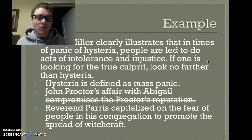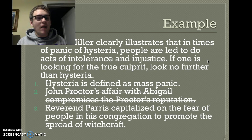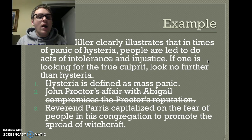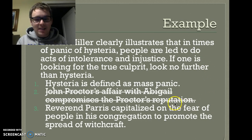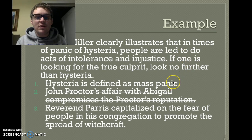If you guessed number two, you'd be correct. The first one — 'hysteria is defined as mass panic' — we can see how that connects to the thesis. The third one about Reverend Parris capitalizing on fear also connects. But the second one has no mention of John Proctor, Abigail, or reputation in the thesis. It doesn't fit. I'm not saying it's a bad sentence, but in the context of this thesis statement it doesn't function well as a topic sentence. Every topic sentence should have a direct connection to the thesis.